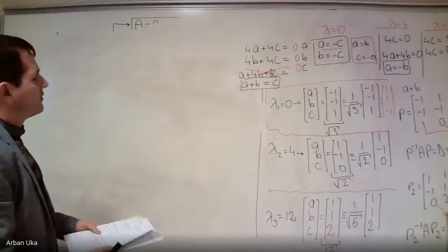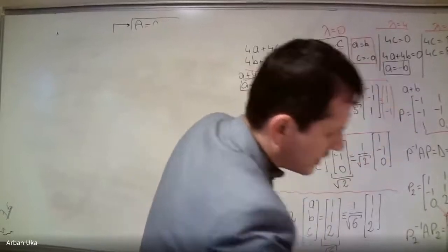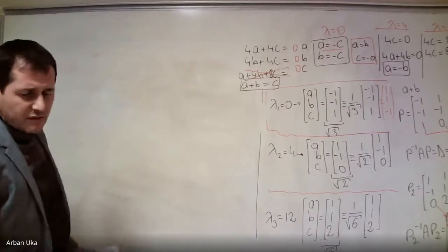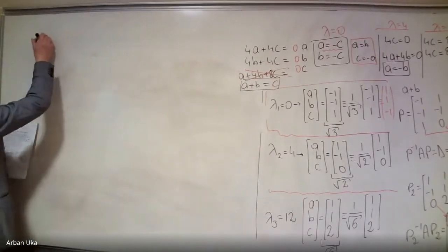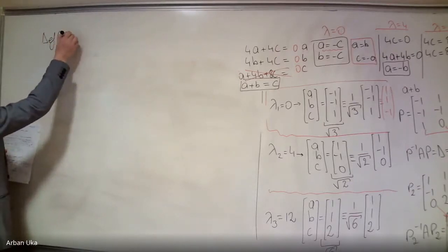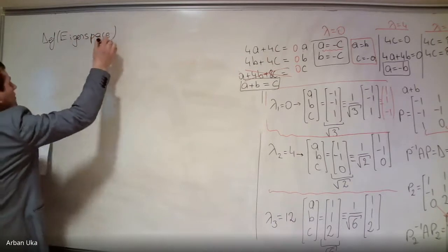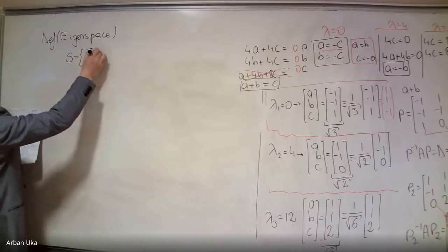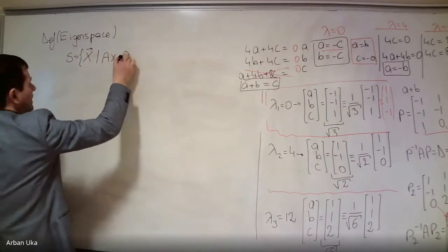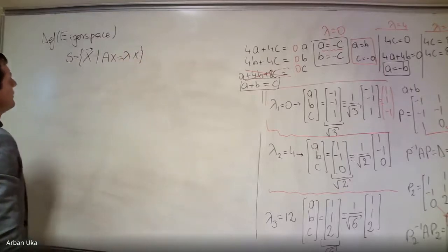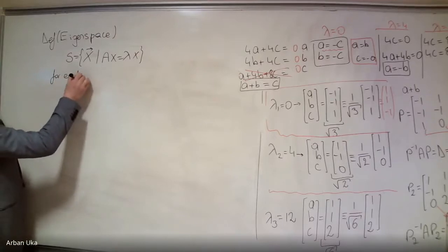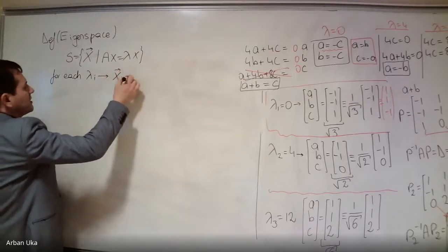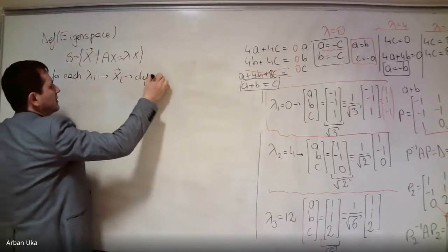We are talking about the eigenvalue equation, eigenvectors and eigenvalues, and eigenspace. A space can be spanned by a specific vector. By definition, the eigenspace is defined as S including all the vectors x such that Ax is equal to lambda x. This means that for each lambda i, we obtain eigenvectors which include x_i, and these x_i define an eigenspace.